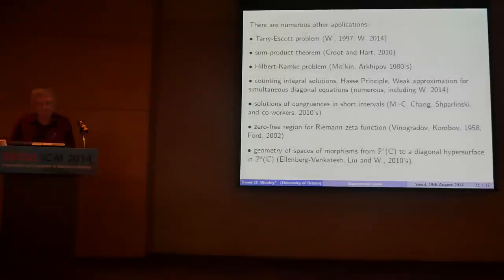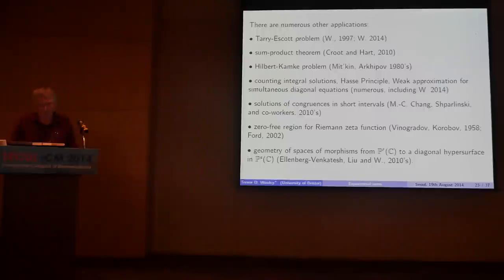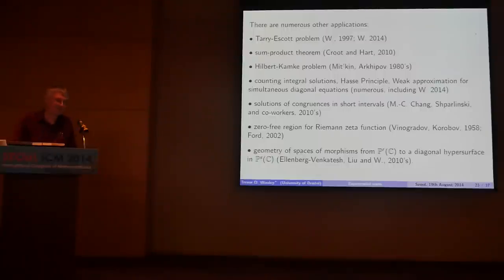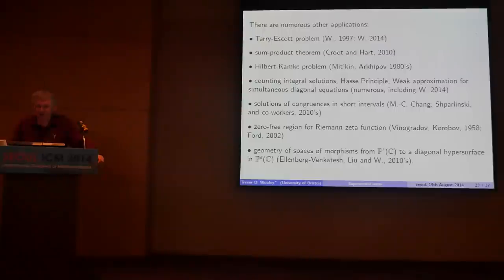We have many, many applications. This is just a summary of some results that use Vinogradov's mean value theorem and can be improved from recent work, including work on the sum-product theorem, solutions of congruences in short intervals, and geometry of spaces and morphisms from looking at the function field analog of Vinogradov's mean value theorem. In some cases you now get non-trivial results where none were available before. Time is running away from me, so let me rapidly sketch the underlying ideas.